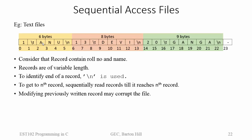Consider that you want to go to the third record. If this is record 1, record 2, and record 3, then you don't know the place where the third record is, because the size is not fixed — so the system doesn't know where the third record begins.